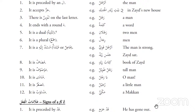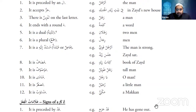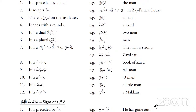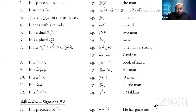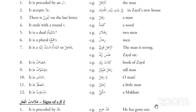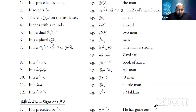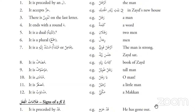The fifth sign is tathniya — the dual. Like 'rajulani' meaning two men. Whenever you have a noun in the dual it will end with an alif and a noon with a kasra. This alif and noon with a kasra is a sign of a noun, not a sign of a verb.